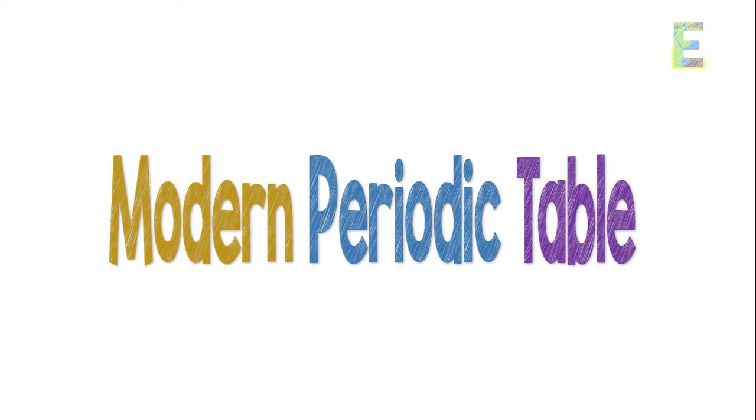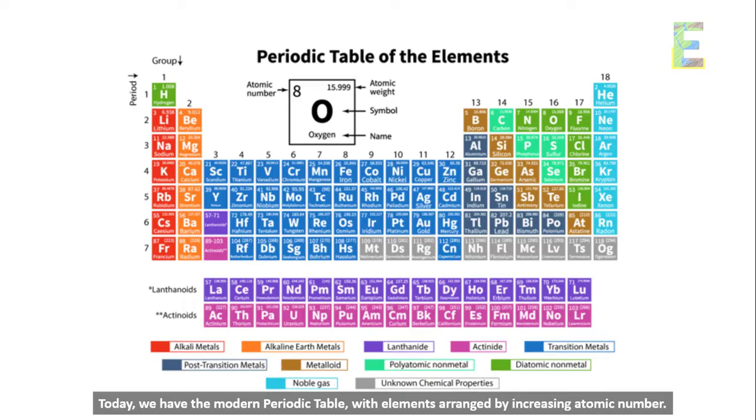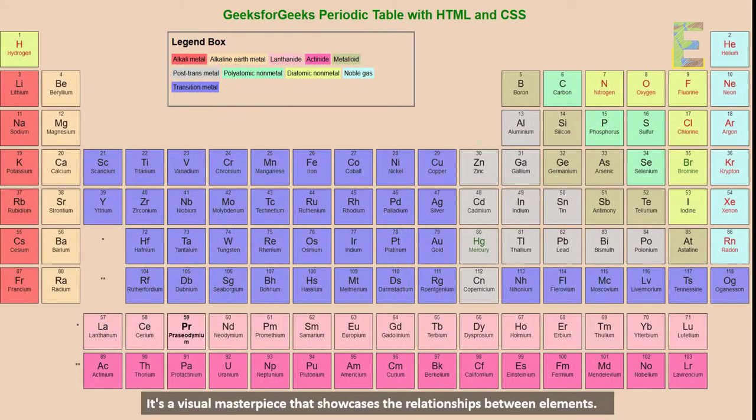Modern Periodic Table. Today, we have the Modern Periodic Table, with elements arranged by increasing atomic number. It's a visual masterpiece that showcases the relationships between elements.